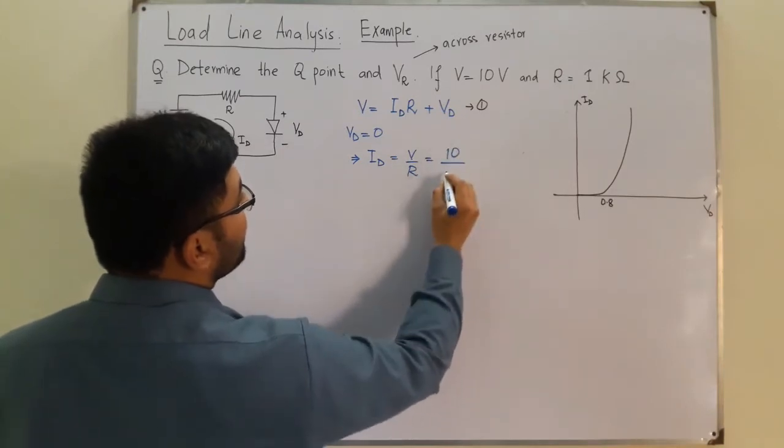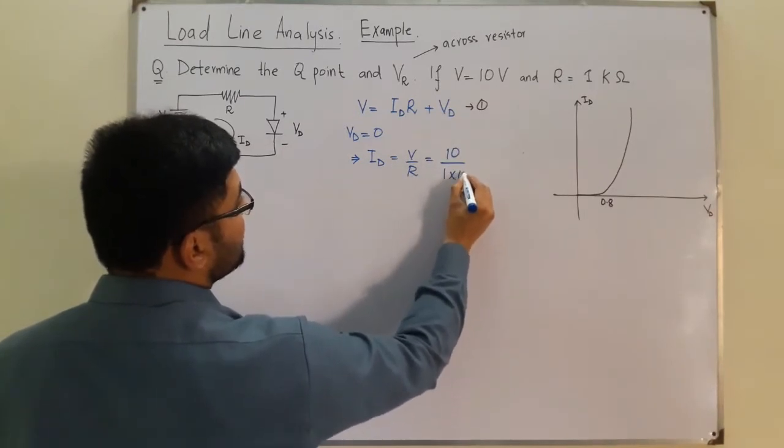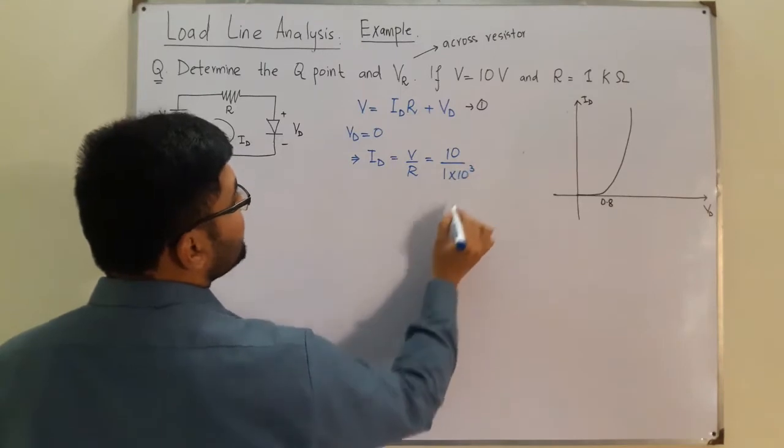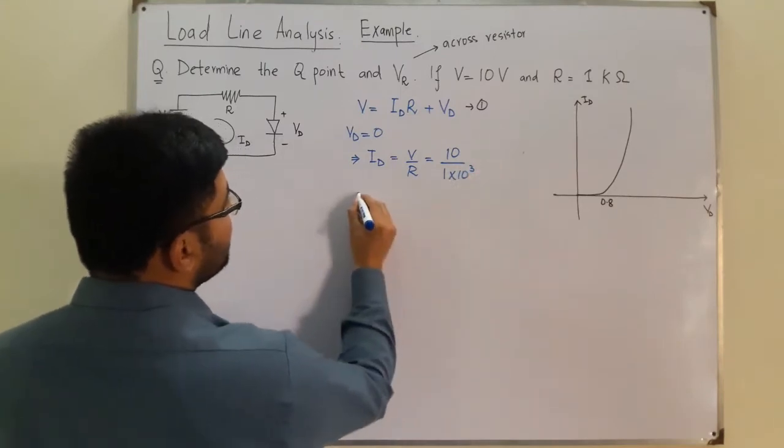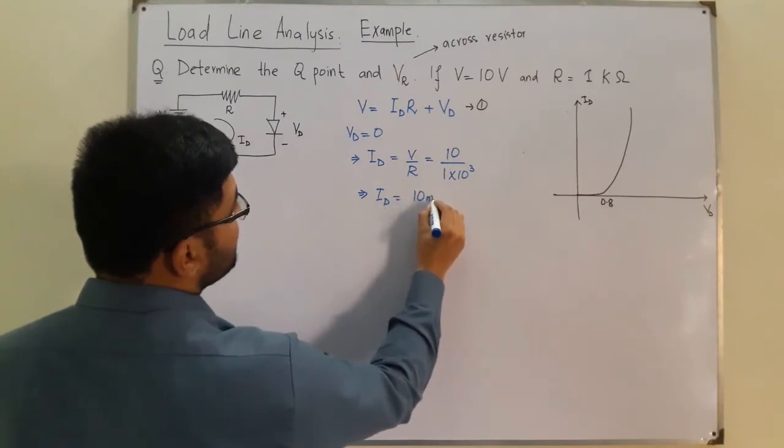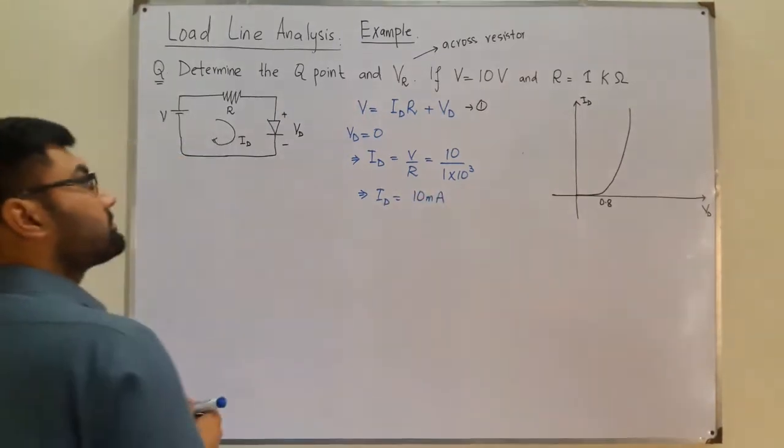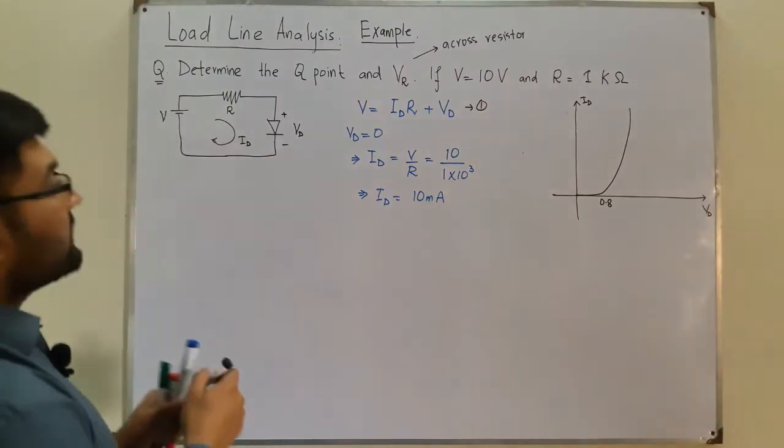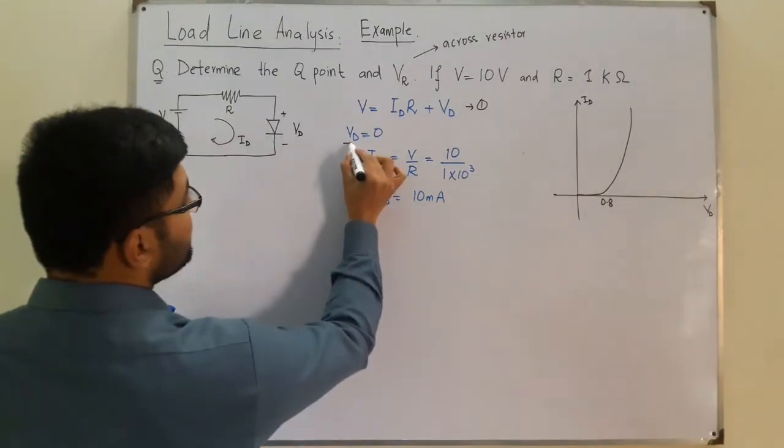And R equals 1 kilo ohm, 10 to the power 3. So this would imply that ID is 10 milliamps. Is that fine? Now, the next thing to do is putting ID equal to 0.